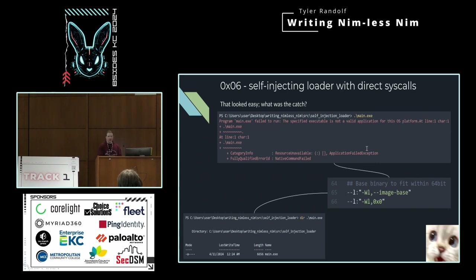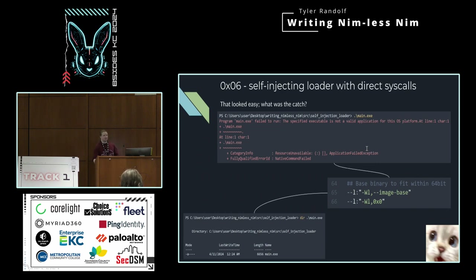That looked easy — what was the catch? If you compile it as-is, it just fails to execute. This is partially due to how the compilation happens — we're getting an overflow trying to compile the program into the 64-bit address space for whatever reason. But weirdly, if we pass in zero for the image base to base the image at zero, it compiles perfectly fine. This leaves the program at 6 kilobytes in size.